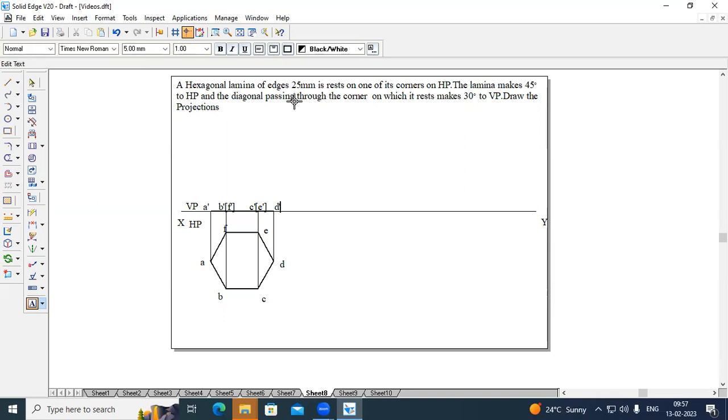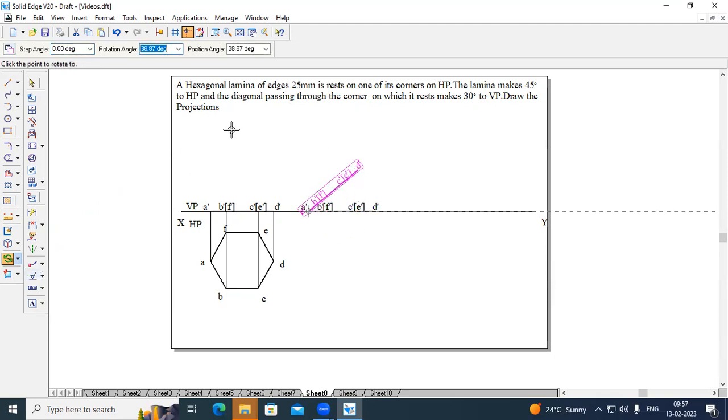In order to create second position, as it says, the lamina makes 45 degrees with respect to HP. Select front view of stage one. Copy. Turn on copy command. And move this A dash at any suitable distance. Place it on the XY line. And go to rotate. Select end A dash and end D dash. Rotate it by 45 degree. Here copy command should be turned off. Rotation angle is 45. Since it is making an angle of 45 degree with respect to HP. Place it.